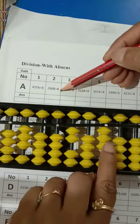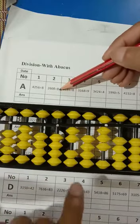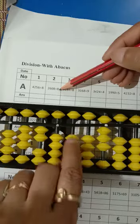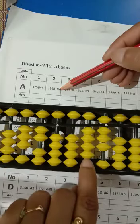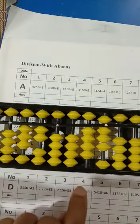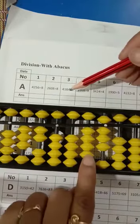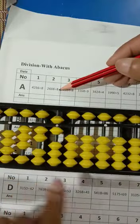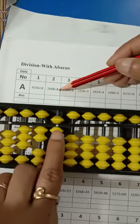We have 208. Then 8 times 2 is 16. 8 times 2, minus 10 and minus 6. We have 48. Then 8 times 8. Here is 48. Then 8 times 6 is 48, minus 8. Your answer is 326.